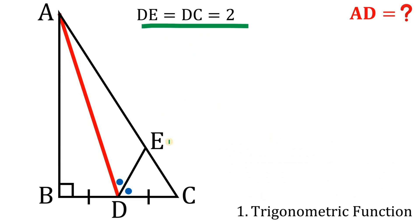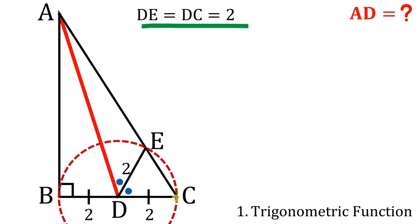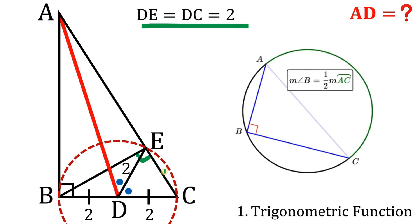Using the given information, DC equals 2 units. Since BD is equivalent to DC, BD is also 2 units. From here, let's create a circle centered at D such that points B and C are on the circle. This is important because if we draw a chord BE, we can say that angle BEC is 90 degrees — triangle BEC is a right triangle because its hypotenuse is the diameter of this circle.